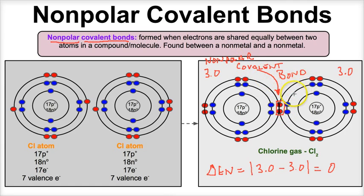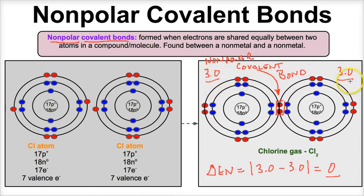There's a nonpolar covalent bond holding these two chlorine atoms together. What does that mean? It means these two electrons are being shared equally between both atoms because their electronegativities are identical — the difference is zero. Electronegativity is the ability an atom has to attract electrons toward itself, so the electrons aren't being drawn to one side or the other — they're shared equally. Nonpolar covalent bonds are typically formed between a nonmetal and a nonmetal.